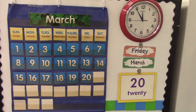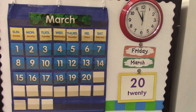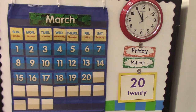Good morning. Today is Friday, March 20th. We're almost finished our week — there's only one more day. What day would that be? That's right, it's Saturday. Let's say the days of the week together: Sunday, Monday, Tuesday, Wednesday, Thursday, Friday, Saturday.